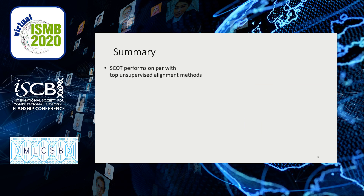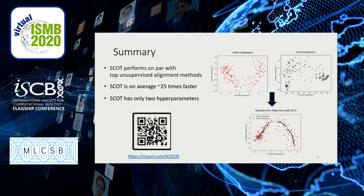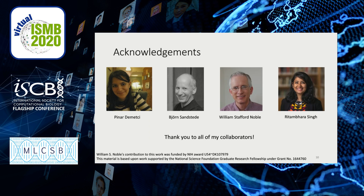In conclusion, we're able to present very good alignment results, a much faster algorithm, and it only has two hyperparameters. If you're interested in finding out more details, such as our implementation, I've included a QR code, or you can use the tiny URL SCOT20 to go to our preprint. Thank you for your time, and thank you to all of my collaborators.